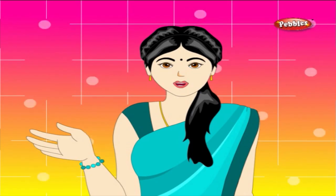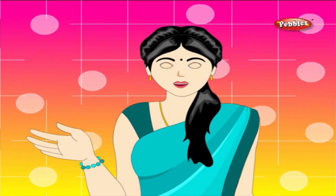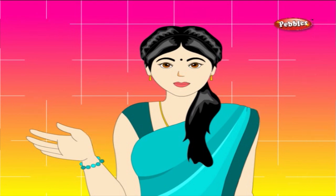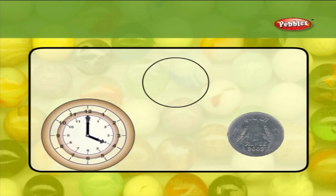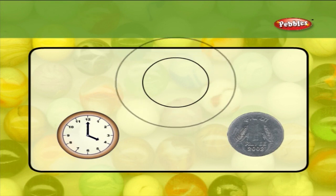Let us now match some of the objects with the shapes. A clock or a coin has the shape of a circle.